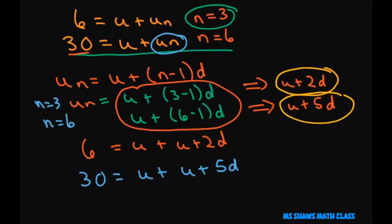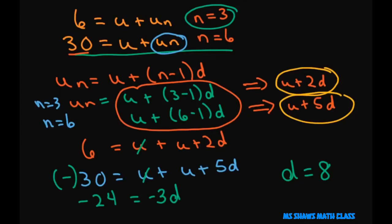Using the process of elimination, I subtract each term to eliminate u. That gives negative 24 equals negative 3d. Dividing both sides by negative 3 gives d equals 8. Now that we have the common difference, we can substitute it back into our equation to find the first term u.